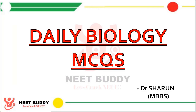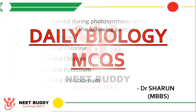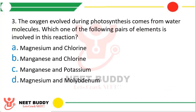That's a lot for promotion guys. So without wasting much time, let's get started. Question number 3: The oxygen evolved during photosynthesis comes from water molecules. Which one of the following pair of elements is involved in the reaction? Option A: Magnesium and chlorine. Option B: Manganese and chlorine. Option C: Magnesium and potassium. Option D: Magnesium and molybdenum. The correct answer is option B — Manganese and chlorine is involved.